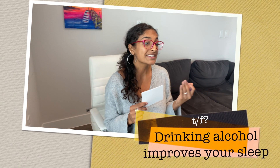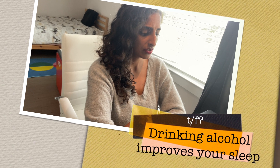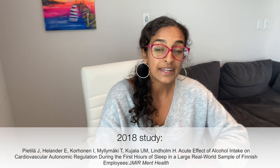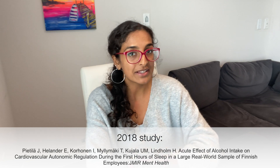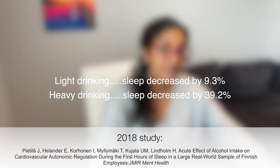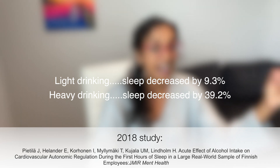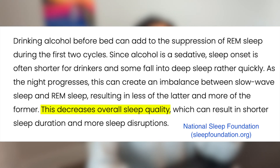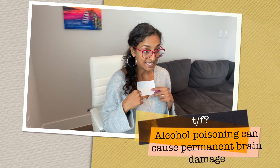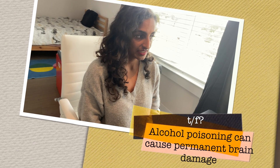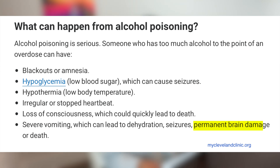Next question: Drinking alcohol improves your sleep — false. A study looked at the effects of alcohol on men and women's sleep and found that very low amounts of alcohol decreased sleep quality by about 9%, while high amounts — more than two drinks a day for men and more than one for women — decreased sleep quality by 39%. Although we may fall asleep faster, the quality of our sleep is not as good. Final question: Alcohol poisoning can result in permanent brain damage — true. Severe vomiting, dehydration, seizures, permanent brain damage, and even death can all happen if you really overdo it on the alcohol.